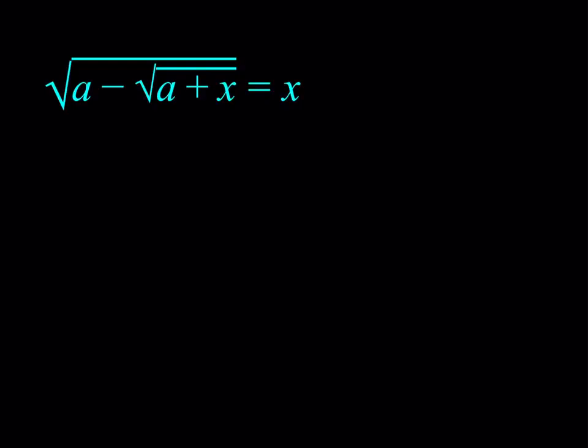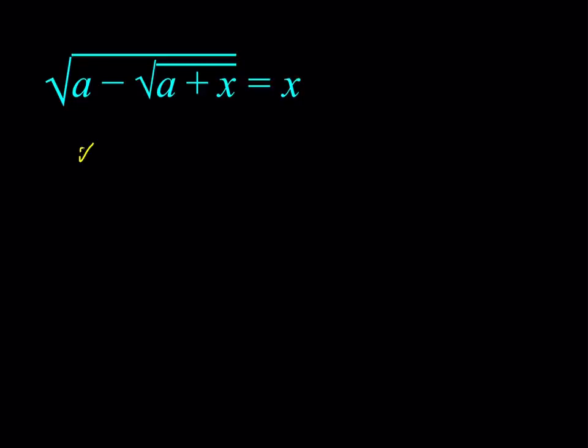A couple of things to notice here. First of all, x needs to be greater than or equal to 0 — that's definitely a must. And then for that very reason, a also needs to be a positive quantity, because if you consider what's inside the radical, we have another radical that has a minus sign, and if a is negative, you're going to get a negative quantity. So a also needs to be greater than or equal to 0. We need to establish these so we can use them later.